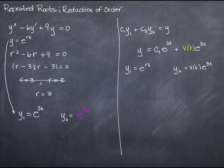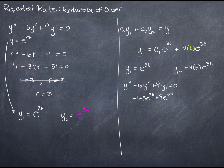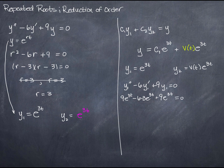We can verify that y1 = e to the 3t is a solution by checking that y'' minus 6y' plus 9y equals zero. y' is 3e to the 3t, and y'' is 9e to the 3t. Plugging in: 9e to the 3t minus 18e to the 3t plus 9e to the 3t equals zero. That is indeed zero, so y1 satisfies the differential equation.